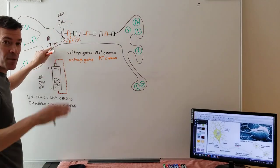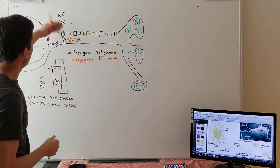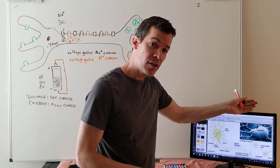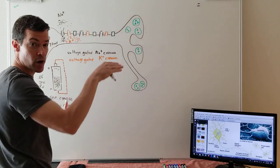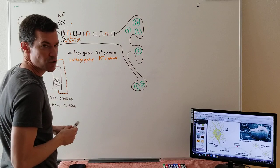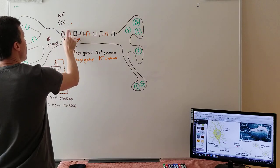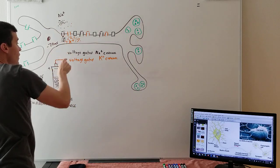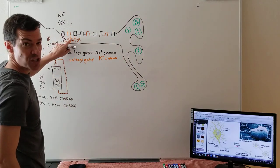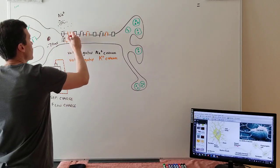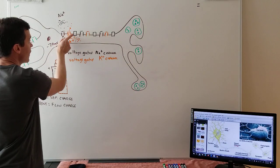That continues until either the door shuts or equilibrium is reached. Then the sodium door shuts and the potassium door opens — the voltage swing provided the trigger for that. Potassium is in high concentration inside, not much outside, so it flows out. Current flows out. Now I've got an electrical message traveling along the nerve cell, but I need it to travel the entire length — from my fingertip all the way to my brain.